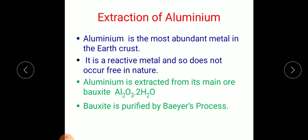Because of this reactiveness, aluminium metal we don't find in free nature. Aluminium is extracted from its main ore bauxite Al2O3.2H2O, and it is purified by a process known as Baeyer's Process.